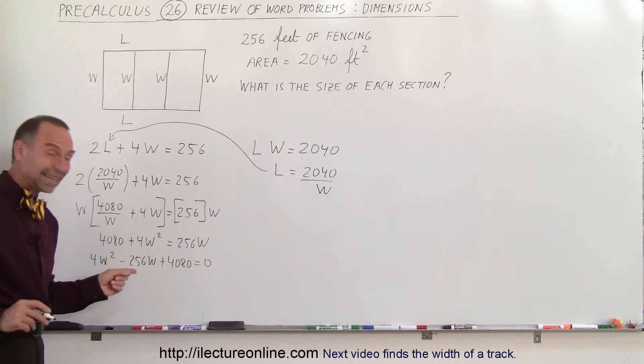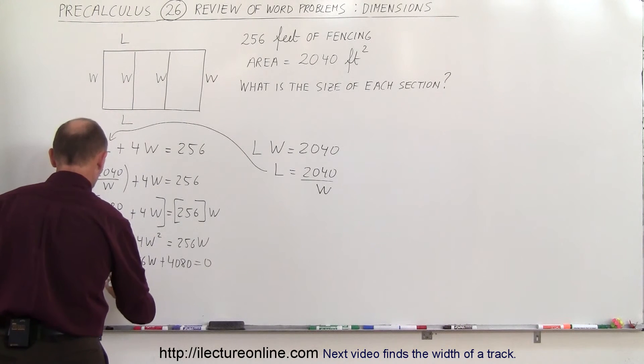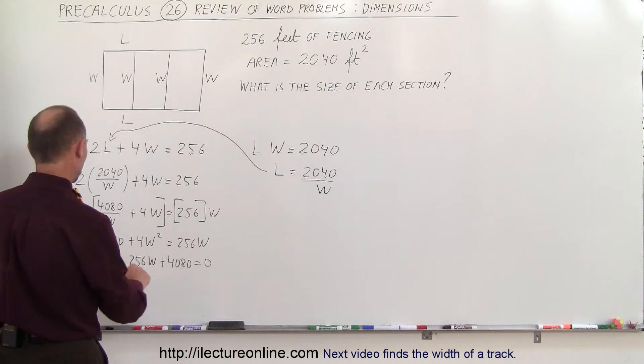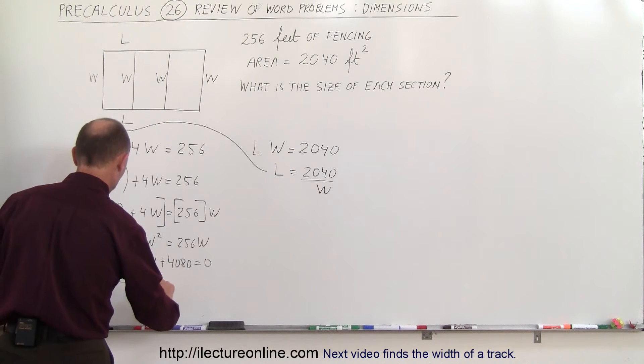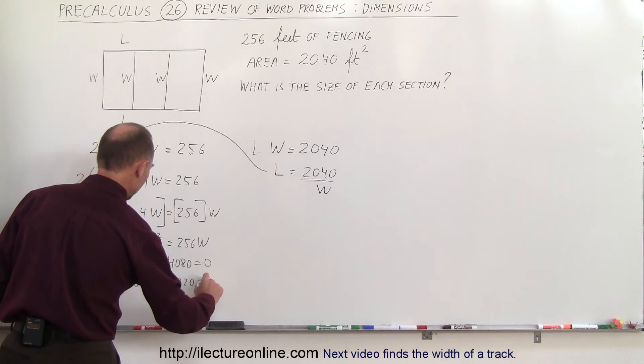And it looks like every term here is divisible by 4, so let's simplify it so we can write W squared minus, 4 goes into 256, that would be 64W, plus that would be 1020 equals 0.